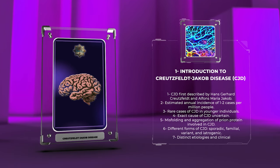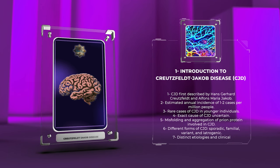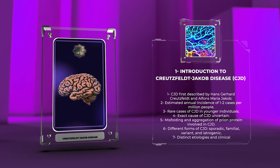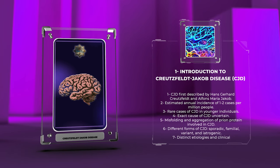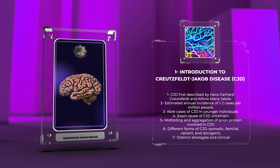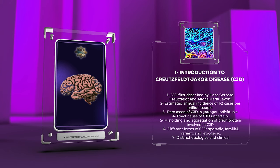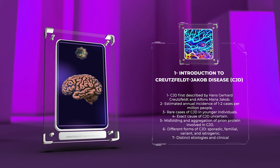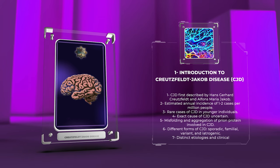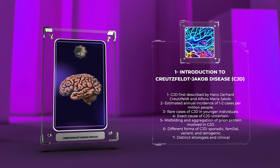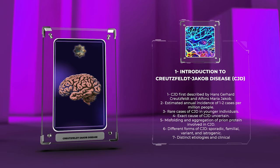It is essential to differentiate between the different forms of CJD, including sporadic, familial, variant, and iatrogenic forms, as they have distinct etiologies and clinical presentations.